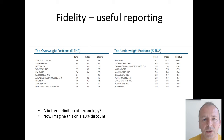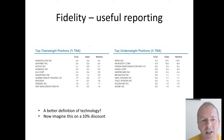Fidelity does some quite useful reporting — they say where they're overweight and where they're underweight, and you can look at it and decide whether you agree. They have a slightly different definition of technology: they include Alphabet, which is Google but sits in the communications sector, and they exclude things like MasterCard which the index calls tech but Fidelity says is just a credit card.